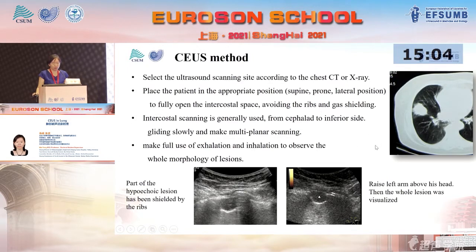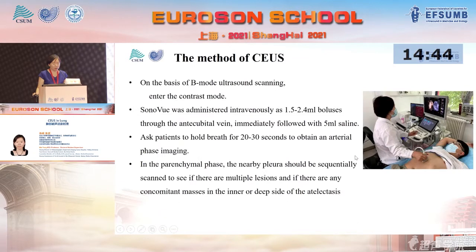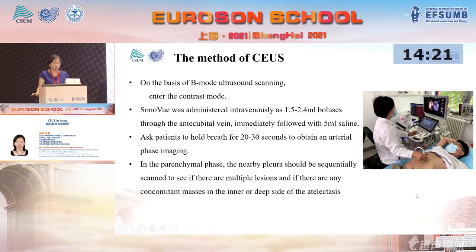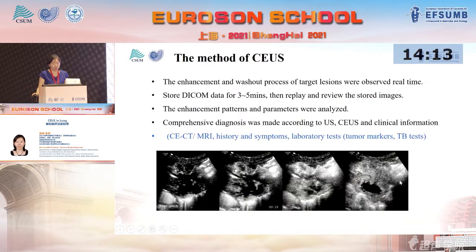Regarding the CEUS method: first, we select the ultrasound scanning site according to the chest CT, place the patient in the appropriate position, and use intercostal scanning. We perform multi-planar scanning and explore the field of view as much as possible. On the basis of B-mode scanning, we enter contrast mode. SonoVue is administered intravenously. We ask the patient to hold their breath for 30 seconds to obtain arterial phase imaging and the parenchymal phase. The nearby pleura should be scanned to check for multiple lesions and concomitant masses on the inner or deep side of atelectasis.